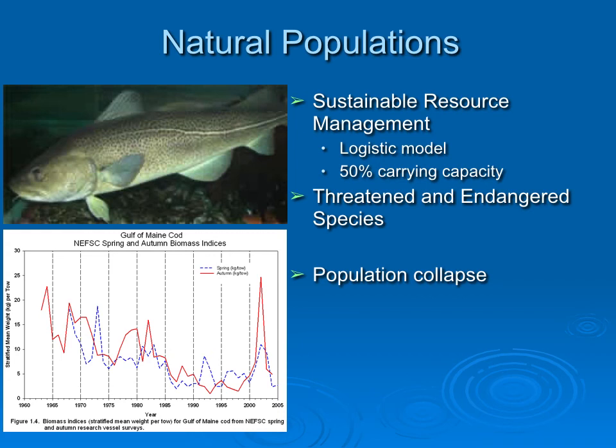Here is a picture of a ling cod, one of the most harvested fish in human history. It turns out it's also an equilibrium species — it's slow to mature and takes a long time before it becomes fertile. If we harvest them too fast, their populations crash. That's what has happened with ling cod, one of the most important fisheries around.